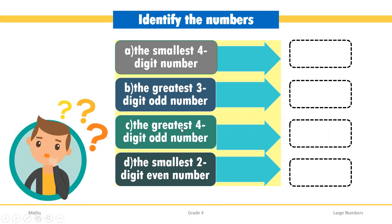Next is the greatest four-digit odd number. Again, we write the greatest number at all four places: 9999. It is given that it should be an odd number. Checking the last digit, it is 9. Whenever the last digit is 1, 3, 5, 7, or 9, these are odd numbers. So this number is obviously an odd number.